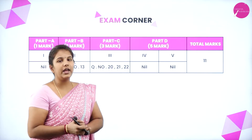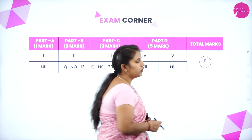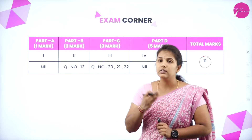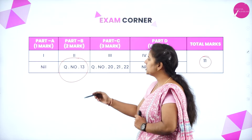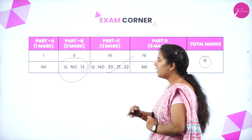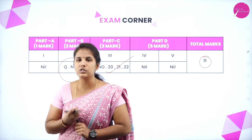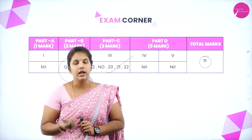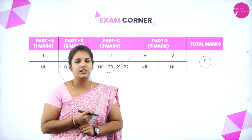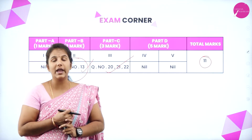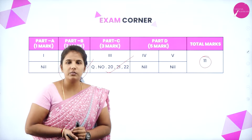From this unit, we can expect totally 11 marks. There is one 2-mark question and three 3-mark questions. The question number 13 from Part B and question numbers 20, 21, and 22, which carry 3 marks from Part C, come from this unit. Totally 11 marks are expected from this unit, and it is one of the easiest units where you can score 11 on 11.